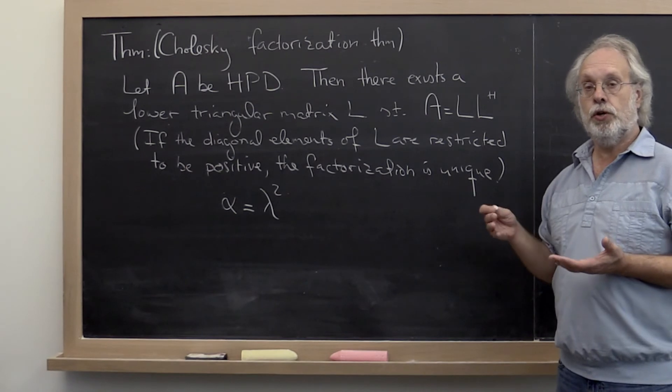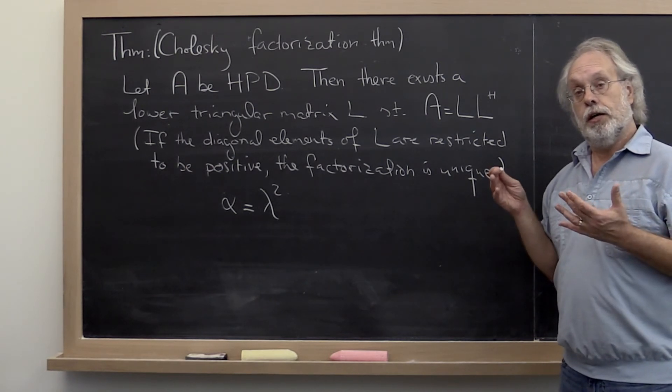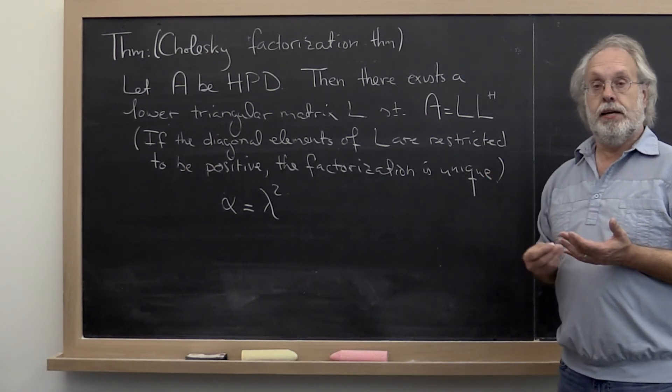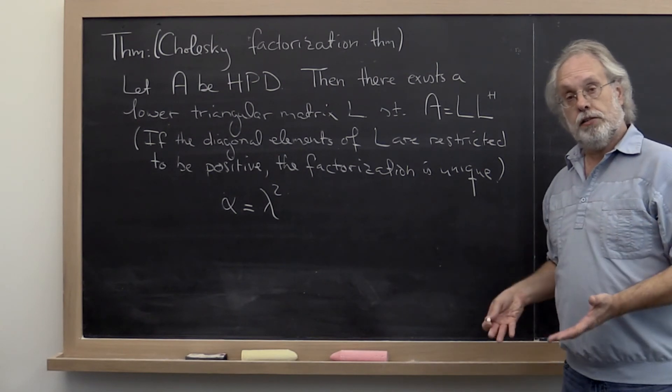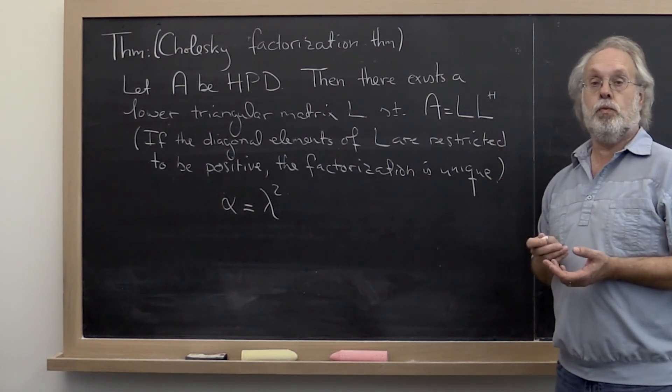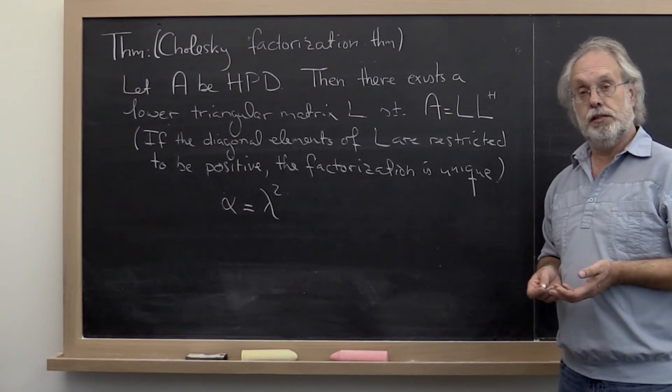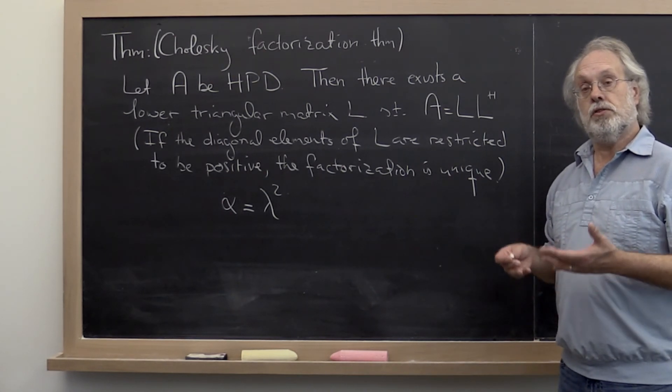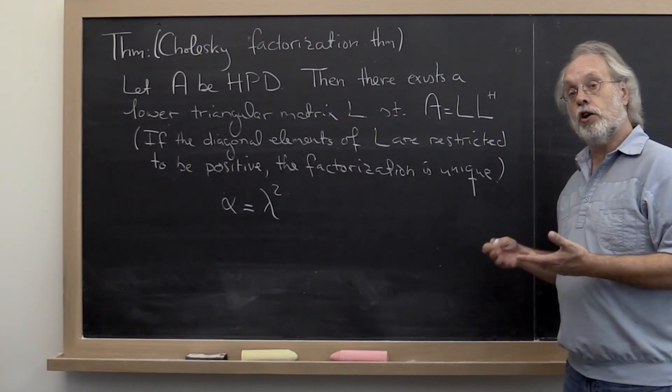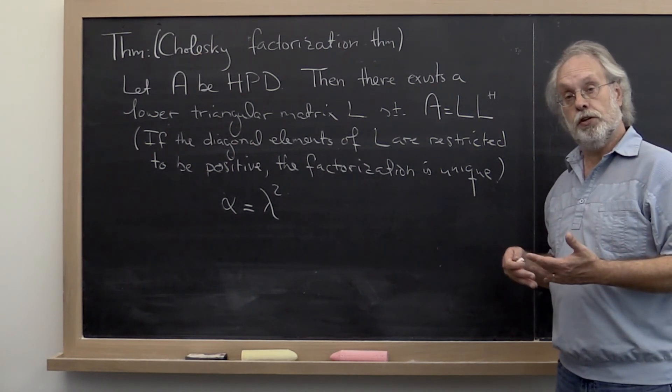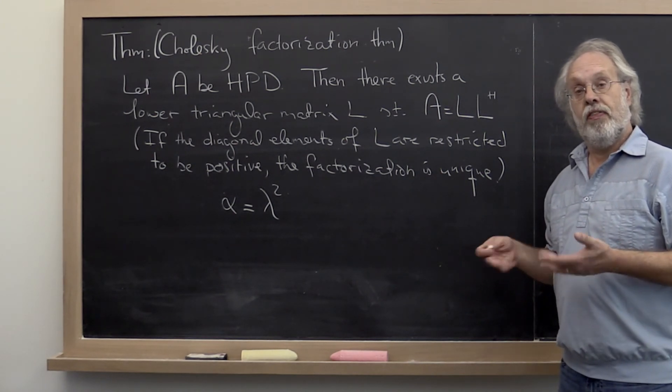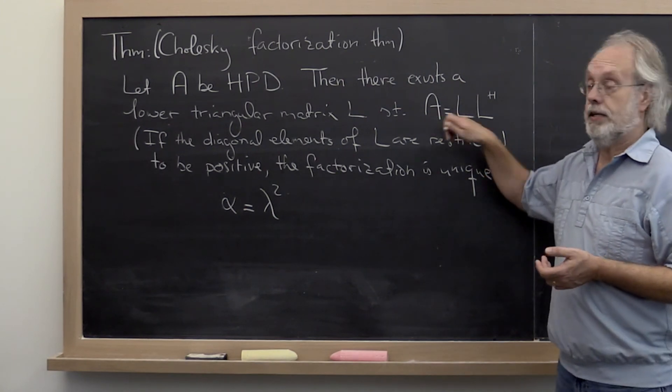And then let's show that the algorithm completes if we start with a matrix A that is Hermitian positive definite. And then since the algorithm completes, we can argue that it computes a unique matrix, and that then is that factor L.